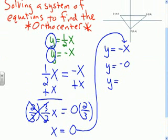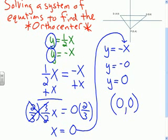Negative 0 doesn't really make sense, so it is just 0. So the coordinates of where those two altitudes meet is 0, 0 right at the origin, right there.